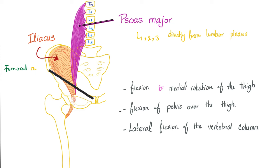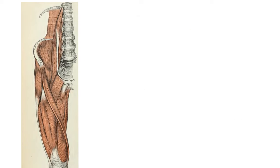When you go to the gym and do sit-ups, you're using your iliopsoas muscles. The psoas major alone can perform lateral flexion of the vertebral column — swinging to the right, swinging to the left.